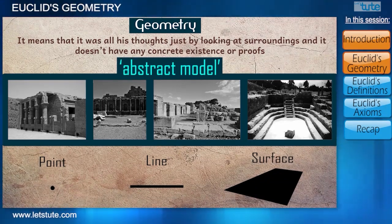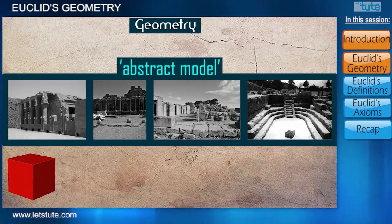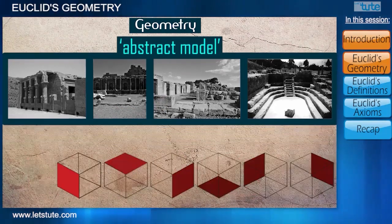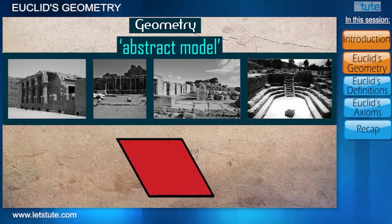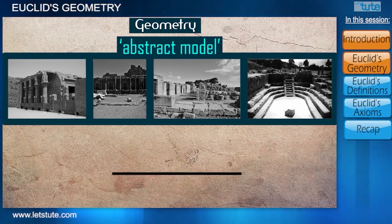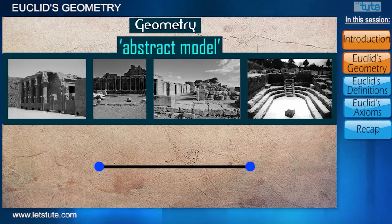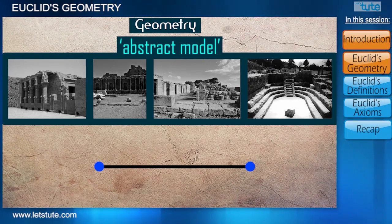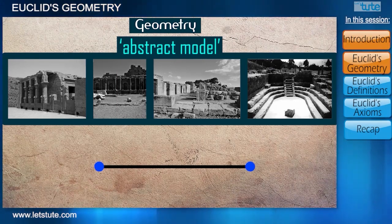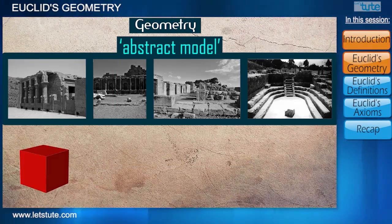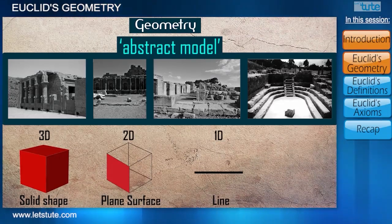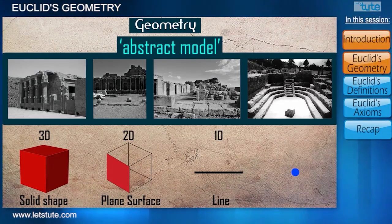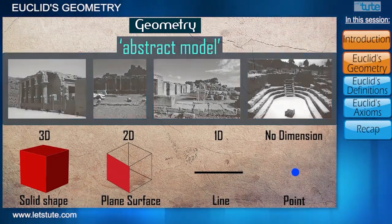Let's take an example of a solid shape — a cube. It has six surfaces, each surface has four sides, and each side has two points. As we move down, we lose one extension each time. A solid shape is 3D, a surface is 2D, a line is 1D, and a point does not have any dimension.